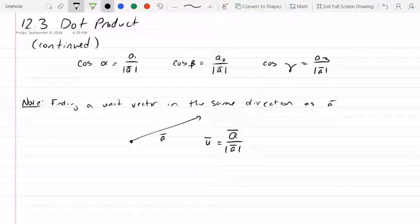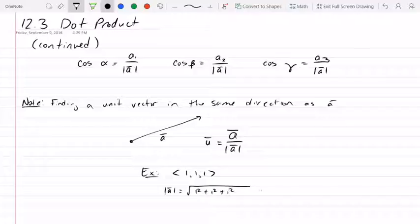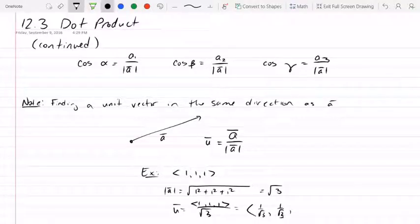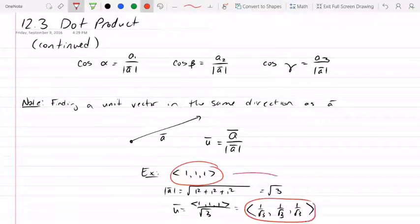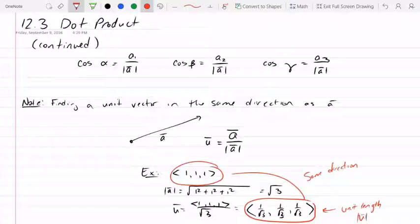For example, if your vector was 1, 1, 1, notice that the magnitude of that vector is the square root of 1 squared plus 1 squared plus 1 squared, which is the square root of 3. So u in that case would be that vector 1, 1, 1 divided by the square root of 3, or 1 over the square root of 3, comma 1 over the square root of 3, comma 1 over the square root of 3. Now, this vector here corresponds to this vector here in that they have the same direction, but this one right here is unit length, meaning that its magnitude is equal to 1.